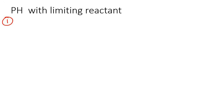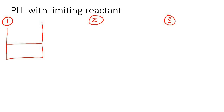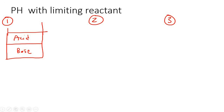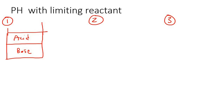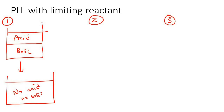There are three different scenarios. In scenario one, you have just the right stoichiometric amounts of acid and base — not necessarily equal volumes, but the correct ratio. What would happen? They neutralize each other completely. No leftovers. So the pH would typically be 7: a perfectly neutral solution.